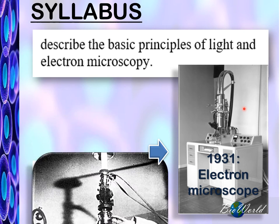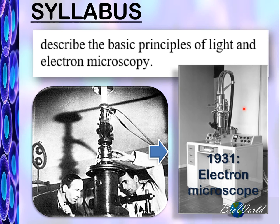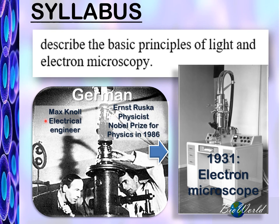The electron microscope was created by two Germans. One was an electrical engineer and the other a physicist. The physicist earned himself a Nobel Prize for his design of the electron microscope.